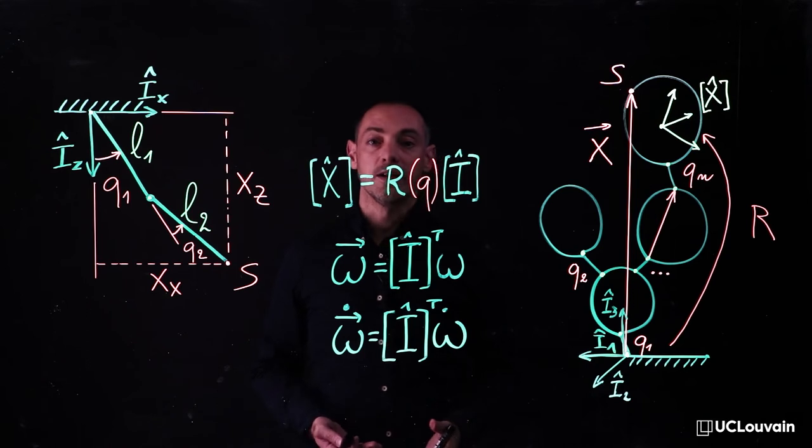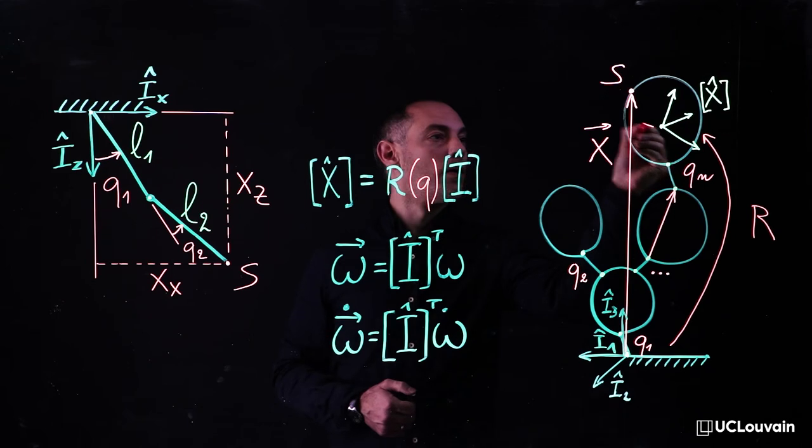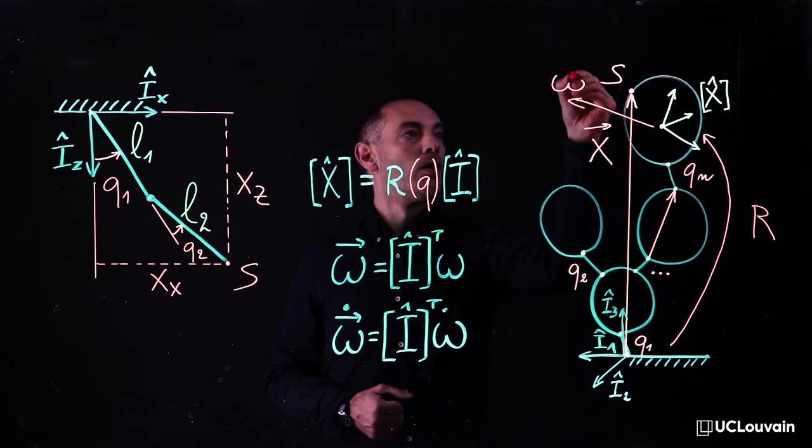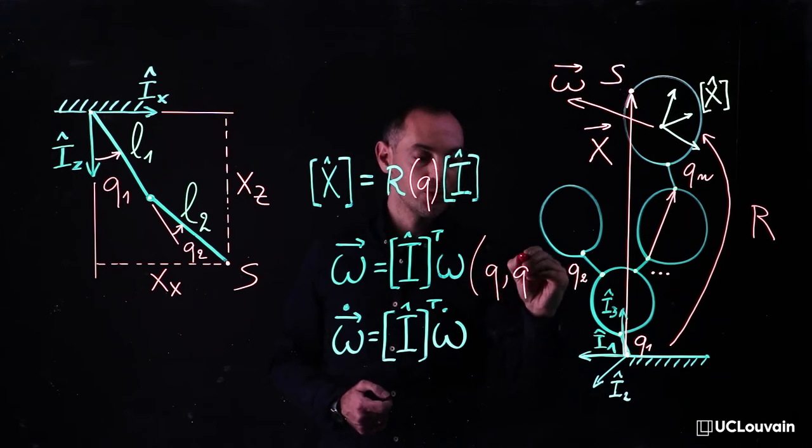Secondly, the absolute angular velocity vector, omega, in terms of q and q dot.